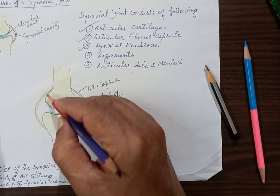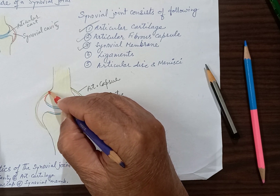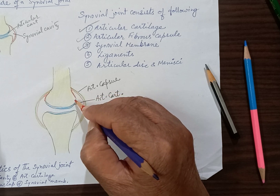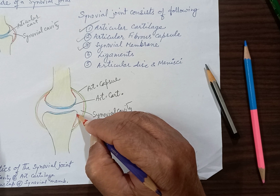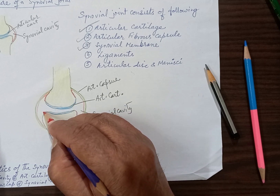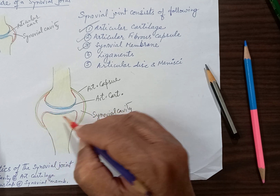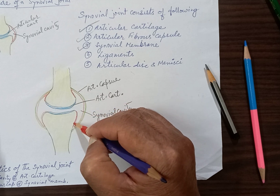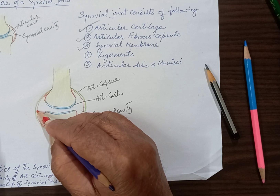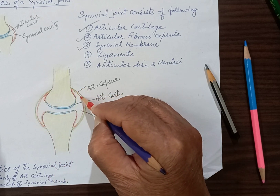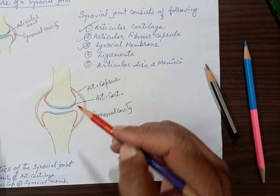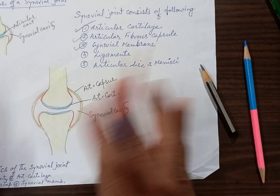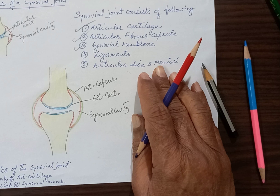Not only does it line the articular capsule, but it reflects onto the non-articular part of the bone — on the surface of the periosteum within the capsule. The intracapsular part of the bone which is non-articular, meaning not coming in contact with the opposite bone and not covered by hyaline cartilage, is also covered by the synovial membrane. So all intracapsular parts except the articular cartilage are covered by the synovial membrane.